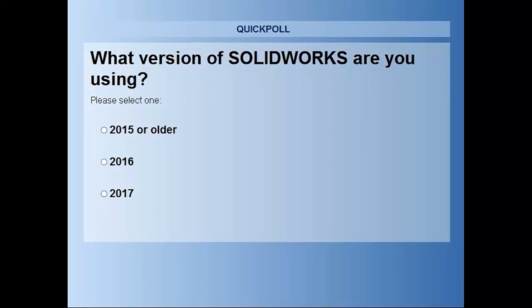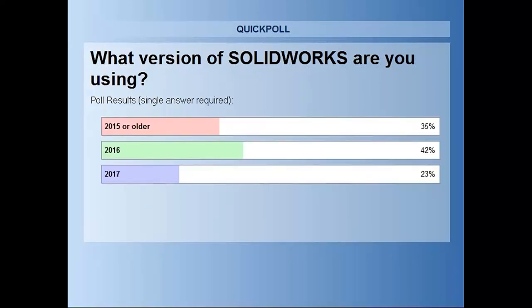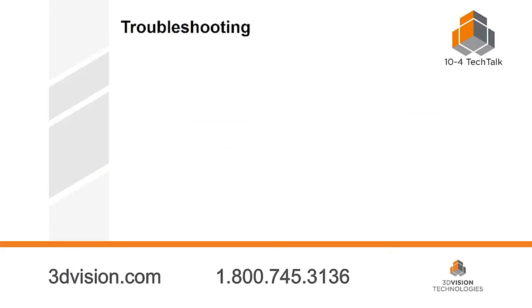One more poll question: what version of SOLIDWORKS are you currently using? Looks like it's across the board — a lot of people are upgraded to 2017, which is great. Now, PDM Standard that comes free with Professional and Premium is only with 2016 and 2017 — that was a new addition in 2016. So if you're at 2015 or older and you're considering PDM, definitely upgrade to 2016 first and then have those conversations with 3D Vision. We can help you through that process.